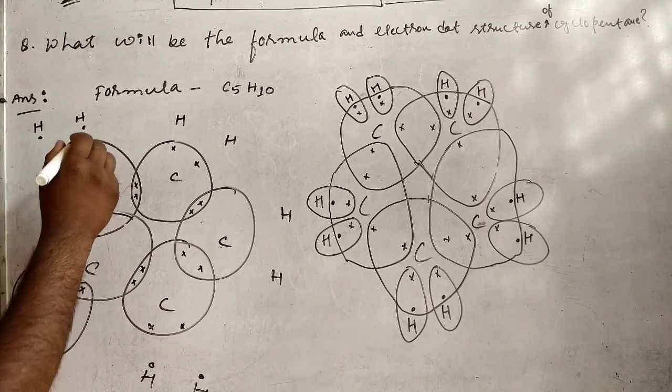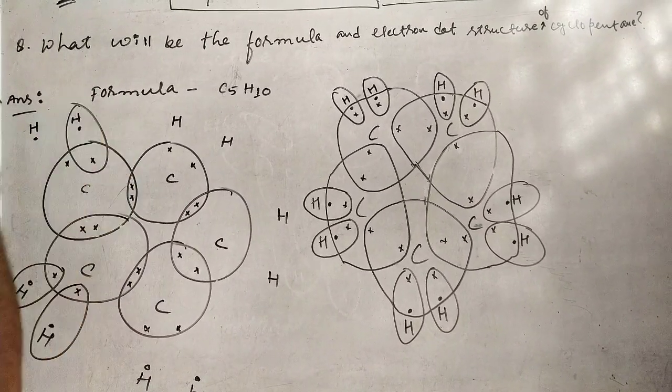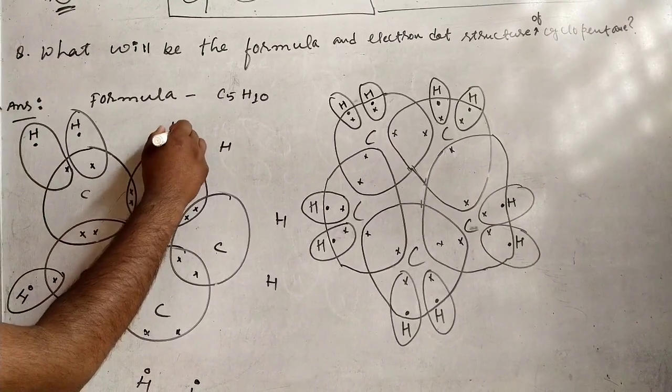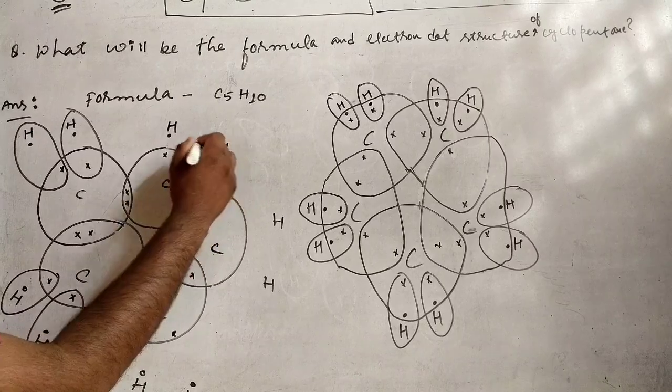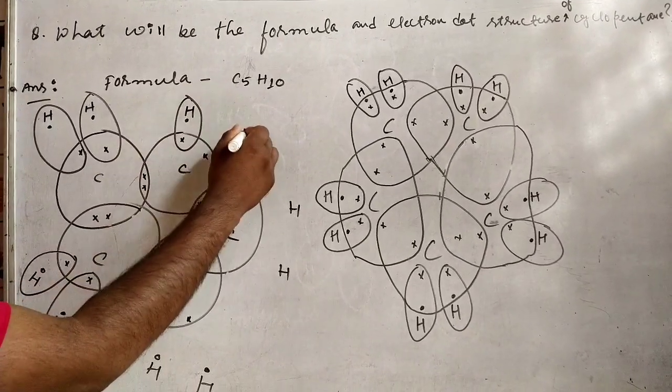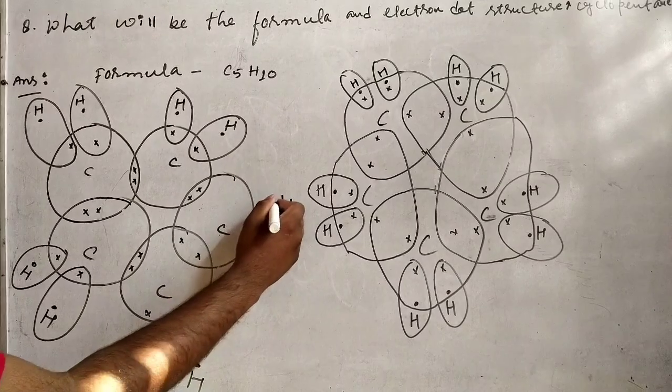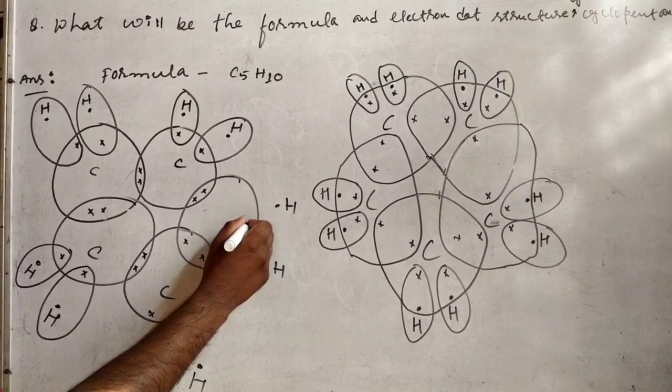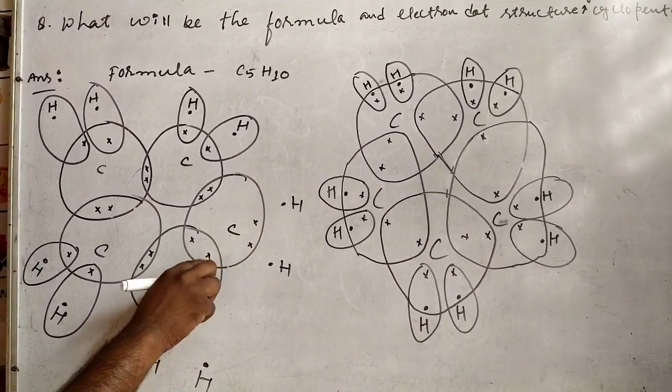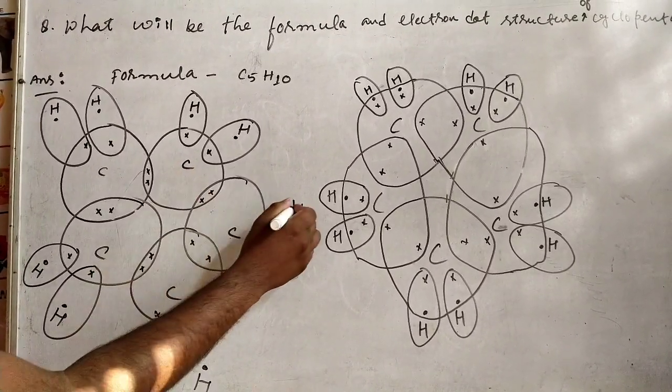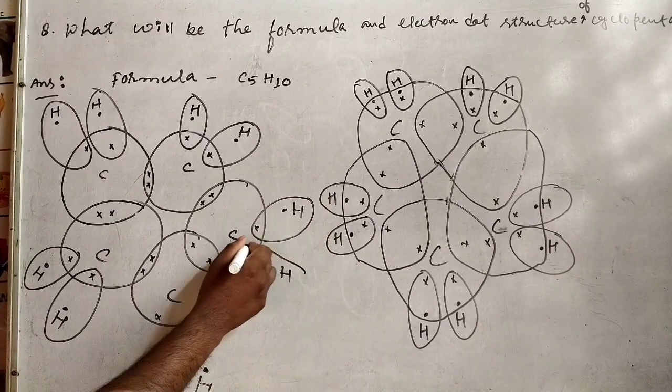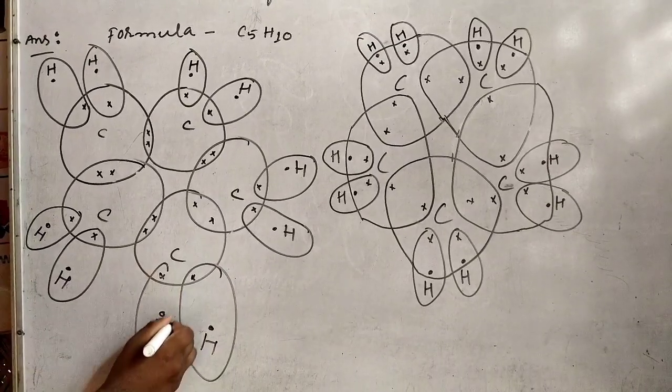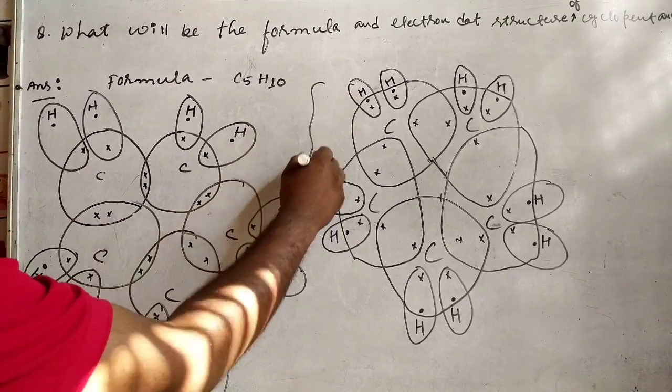So hydrogen - one electron. Hydrogen - one electron. Hydrogen, hydrogen. Two carbon, one two three four. One carbon, four valence. So ultimately what happened, very easy. I have already solved it.